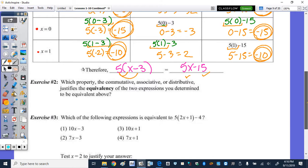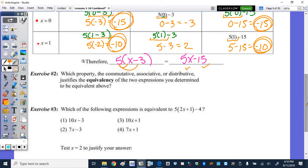So number 2 says which property, the commutative, associative, or distributive, justifies the equivalency we just discovered. And I had just stated that. So that's the distributive property.